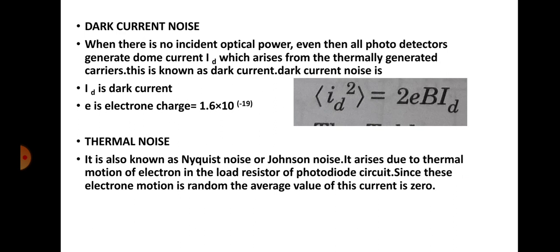Dark current noise: even when there is no incident optical power, photodetectors like PIN photodiodes or avalanche photodiodes generate some current I_d, called dark current. This arises from thermally generated carriers. The mean square value of dark current noise is i_d² = 2e · B · I_d, where I_d is the dark current and e is the electron charge with value 1.6 × 10⁻¹⁹ C. Thermal noise, also known as Nyquist noise or Johnson noise, arises due to the thermal motion of electrons in the load resistor of the photodiode circuit; since the electron motion is random, its average value is zero.